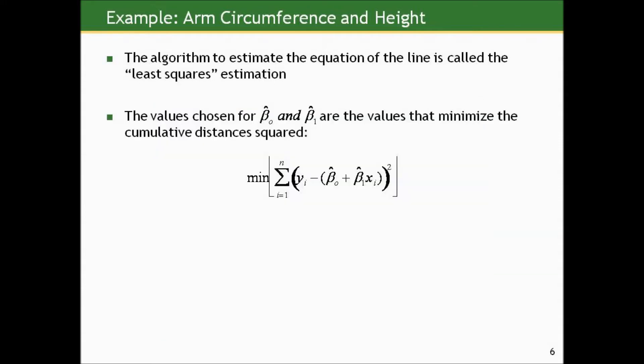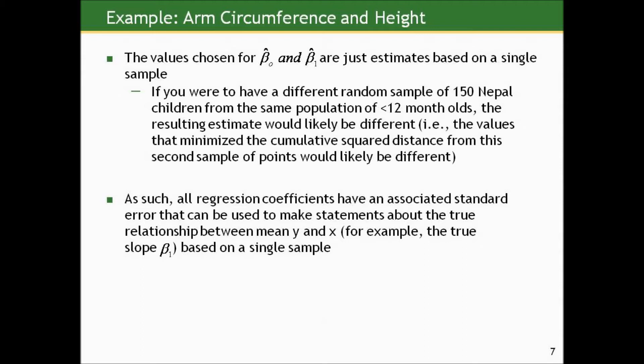The algorithm to estimate the equation of the line is called least squares estimation. The values chosen for the slope and intercept are the values that minimize the cumulative distances squared across all data points in the sample. You sum up the squared distance of each observed y value from its corresponding value on the line across all data points. The values of beta-not-hat and beta-one-hat chosen are those that minimize this sum of squared distances — that's why it's called least squares estimation.